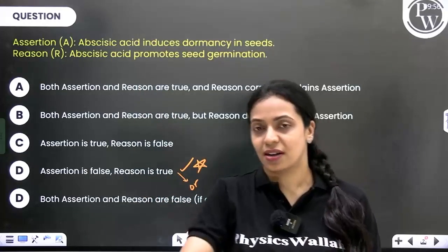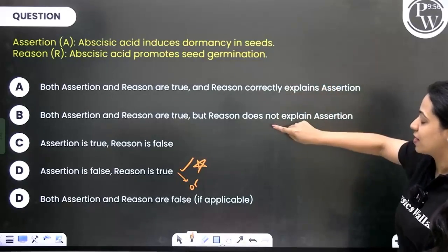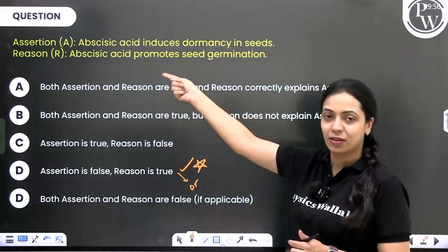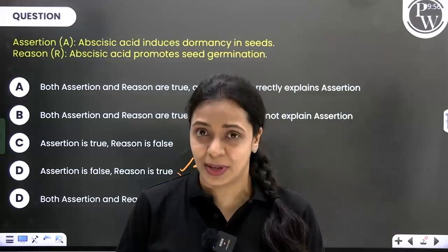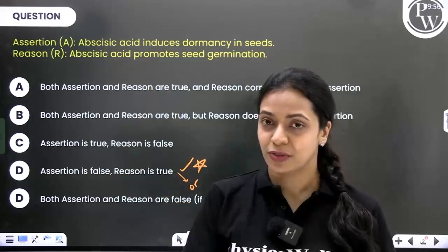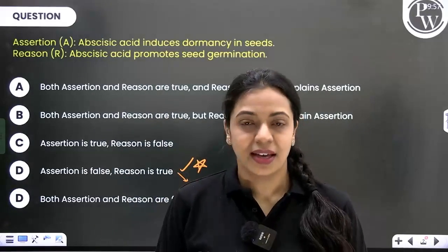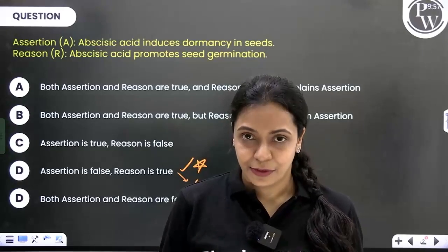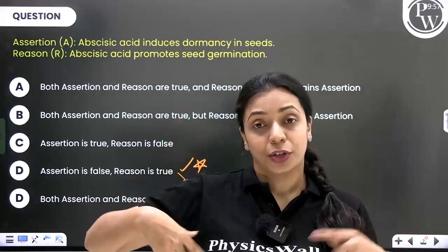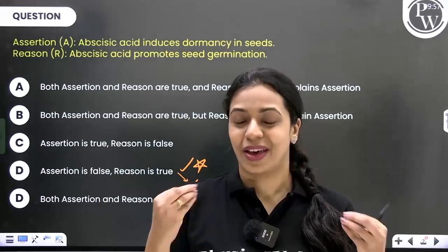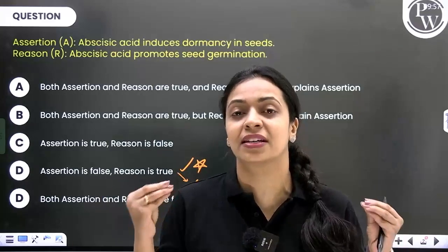It could be that 'both assertion and reason are true and reason doesn't correctly explain the assertion' is the first option, or any other option could be first. The order of options could change, but because you are so familiar with one order, in a state of anxiety, nervousness, and exam pressure, it is possible that you assume the order and mark the incorrect answer. So every time you come across such a question, please make sure to read the options correctly.